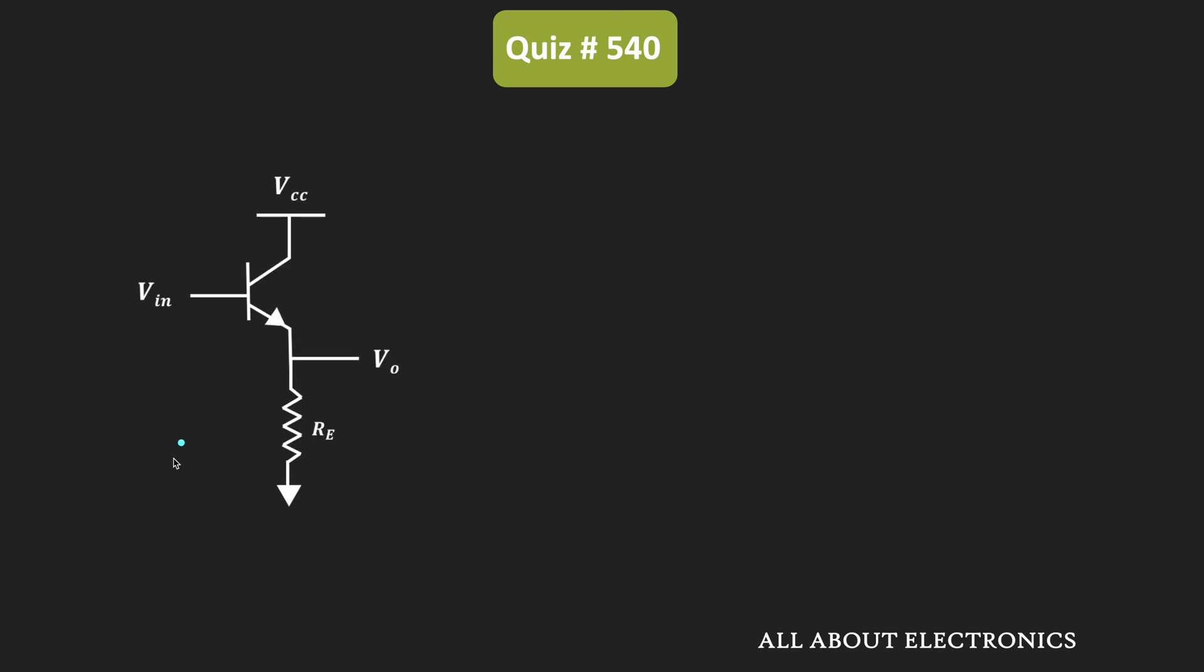For simplicity, the biasing circuit for this common collector amplifier is not shown. Just assume that this common collector amplifier is biased in such a way that it operates as the amplifier.